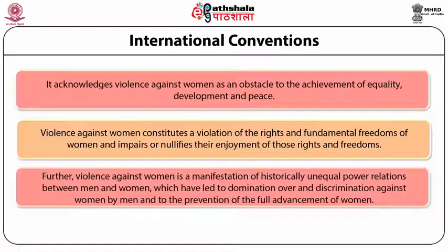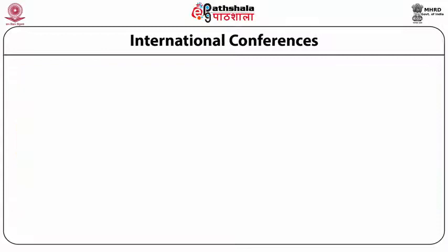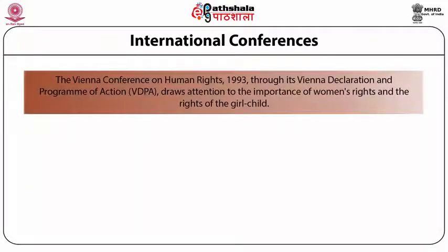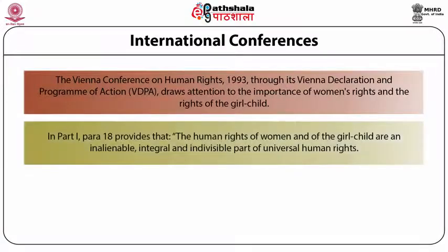Violence against women is a manifestation of historically unequal power relations between men and women, which have led to domination over and discrimination against women by men and to the prevention of the full advancement of women. The Vienna Conference on Human Rights 1993, through its Vienna Declaration and Programme of Action, draws attention to the importance of women's rights and the rights of the girl child. In Part 1 Para 18, the conference provides that the human rights of women and of the girl child are inalienable, integral and individual part of universal human rights.